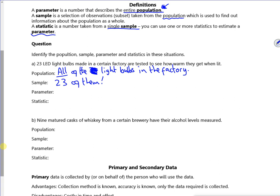In terms of a parameter, I'm looking at the warmth. So a parameter could be the average warmth of all of them, whereas a statistic will be the average warmth of the 23 bulbs. Can you see the difference? The population is everything, the sample is a subset of it, the parameter is something you're working out for everything, and the statistic is something you're working out for your sample.